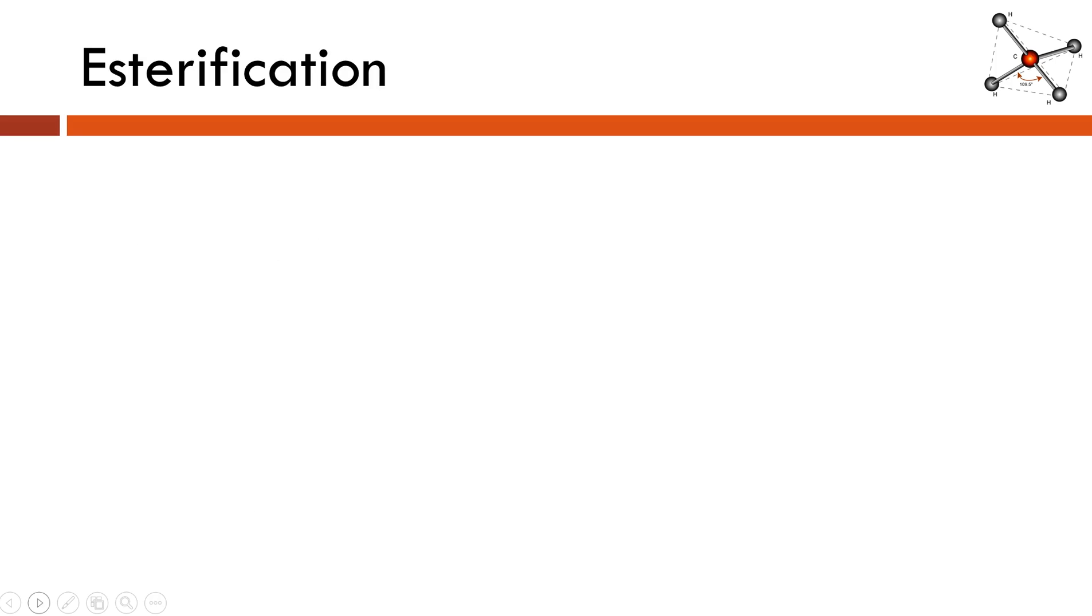All right, our last and probably most complicated of the three reactions we're going to talk about today is esterification. Take a guess on what sort of molecule we're going to form. Hopefully you're thinking ester. It's kind of a dead giveaway, this name. Esterification is a reaction that will produce an ester. Before we get into the reaction itself, let's think about what an ester is going to look like.